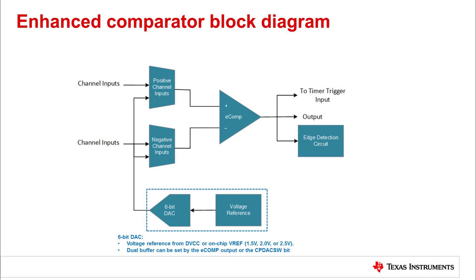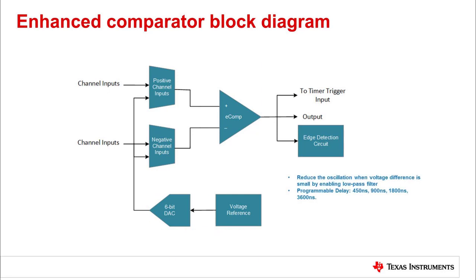The DAC reference voltage can be sourced from VDD or the on-chip voltage reference module. The output of the comparator can be used with an optional analog low-pass filter. The delay of the filter can be adjusted in four different steps, including 450 nanoseconds, 900 nanoseconds, 1800 nanoseconds, and 3600 nanoseconds. All comparator outputs oscillate if the voltage difference across the input terminals is small, which reduces the accuracy and resolution of the comparison result. Selecting the output filter can reduce errors associated with the comparator oscillation.